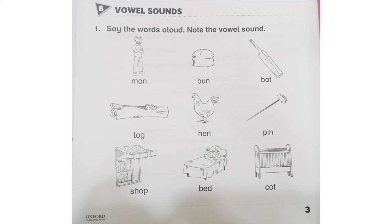Look at the first picture: Man — M, A, N. Say it aloud with me: M, A, N — Man. Which one is the vowel sound? Yes, A is the vowel sound — underline the A. Now look at the second picture: Bun — B, U, N. Which one is the vowel sound? U is the vowel sound in Bun — underline the U. Look at the third picture: Bat — B, A, T. Which is the vowel sound in Bat? A is the vowel sound — underline the A.